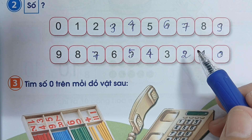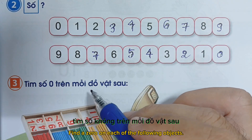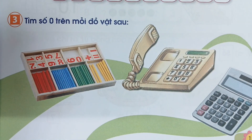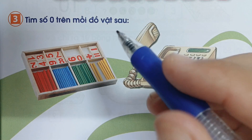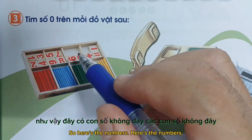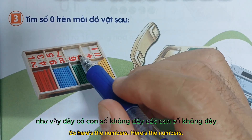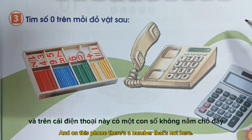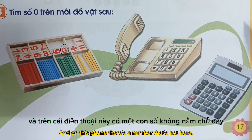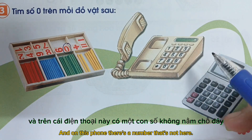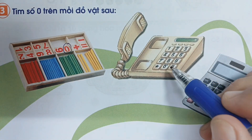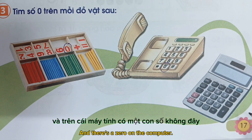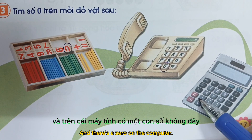Câu 3: Tìm số 0 trên mỗi đồ vật sau. Như vậy đây có con số 0 — đây các con, số 0 đây. Và trên cái điện thoại này có 1 con số 0 nằm chỗ đây. Và trên cái máy tính có 1 con số 0 đây.